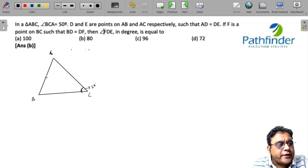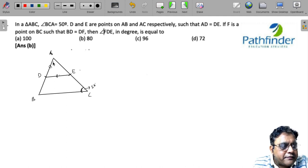D and E are points on AB and AC respectively. So this is D and this is E such that AD is equal to DE. So let us join D and E and we have AD is equal to DE, which means if this angle is X, this angle DEA also must be X.